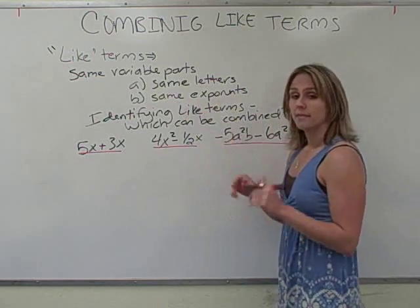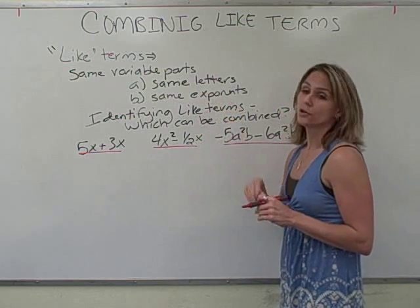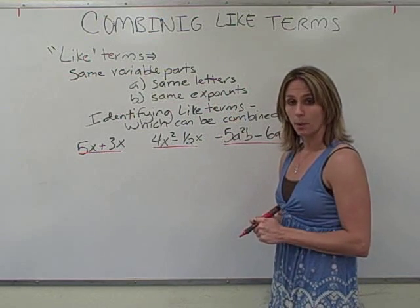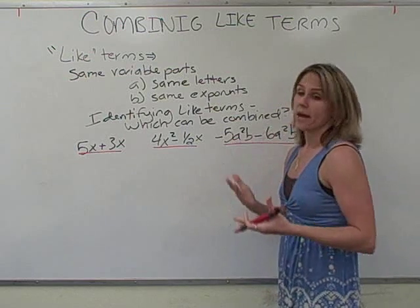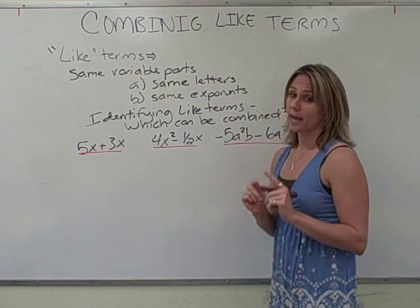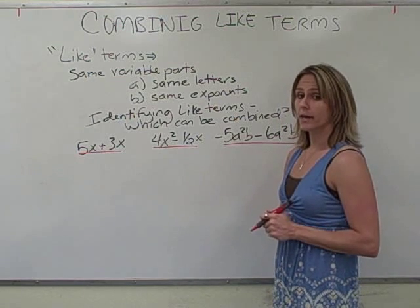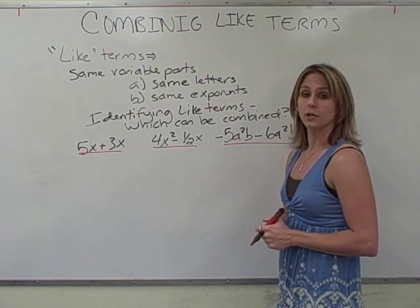Besides having the same letters, those letters also need to have the same exponents. So you might have X squared in all of them, but it has to have all of them. Each term has to have that X squared if you're going to have like terms.